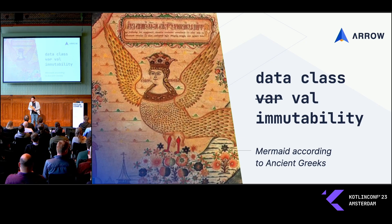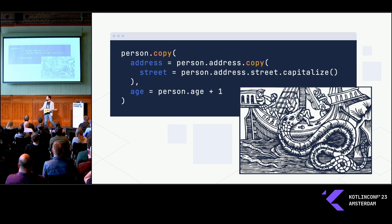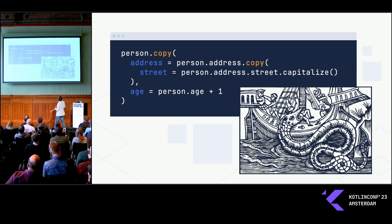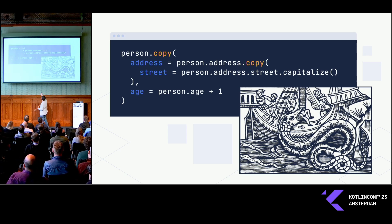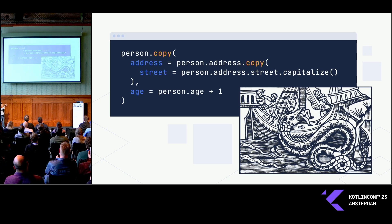But as always, the mermaid turned into a monster. And suddenly, every time I had to do anything, I had copy of copy of copy of copy of. How many times do I have to write person dot to change the age and capitalize?